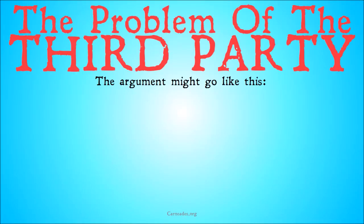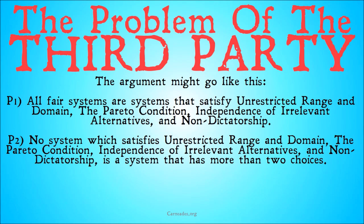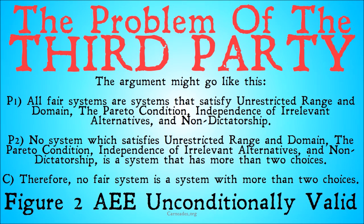The argument goes like this. All fair systems are systems that satisfy unrestricted range and domain, the Pareto condition, independence of irrelevant alternatives, and non-dictatorship. No system which satisfies those conditions is a system that has more than two choices. Therefore, no fair system is a system that has more than two choices — or in other words, all systems with more than two choices are unfair. That's figure 2, AEE — unconditionally valid.